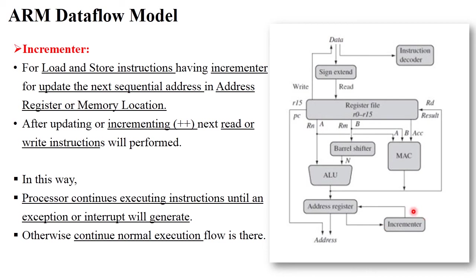The next component is the incrementer. The ARM processor follows load and store instructions. The incrementer is generally used to increment a value or an address. For example, after performing 2 plus 2 equals 4, the value 4 is stored in memory. When you need to perform the next operation like 3 plus 3 equals 6, the memory address is incremented and the value 6 is stored at the next address. The incrementer works like a pointer — it increments sequential addresses so the next operation can be performed.